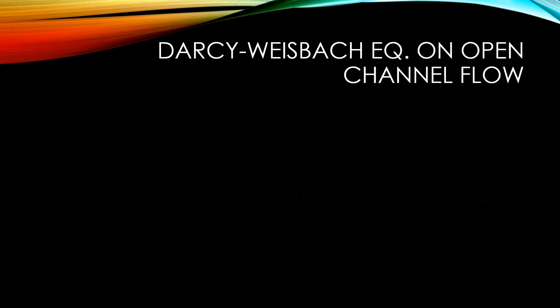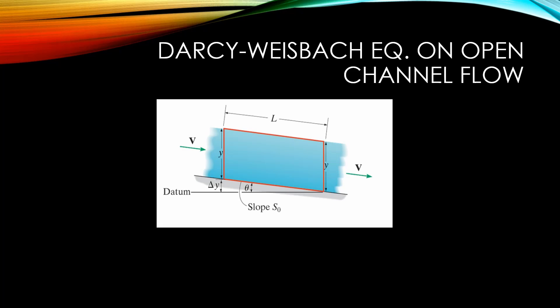In order to understand how the Chézy equation works and relates to friction, let's look at how the Darcy-Weisbach equation applies to open channel flow. Let's consider a steady, uniform open channel with a constant cross-section, as shown in the figure. If we want to apply the energy equation for steady, uniform flow, we can set our inlet control surface on the left as number 1 and our outlet control surface on the right as number 2.